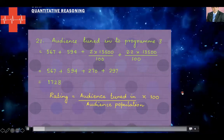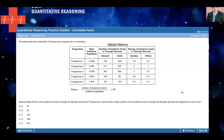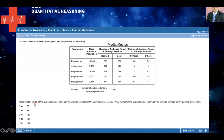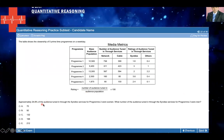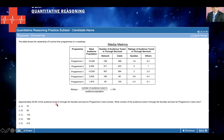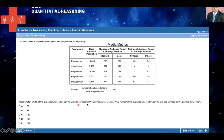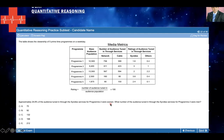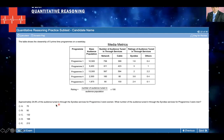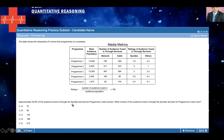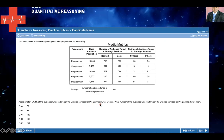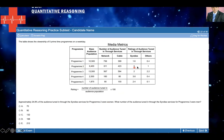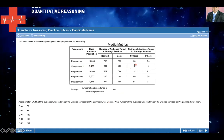Let's look at the next question. You have the same table again. It says that approximately 24.8% of the audience tuned in through the Sendase services for program two were women. Find out how many audience tuned in through the Sendase services for program two were women. Program two comes here, and this is the rating.